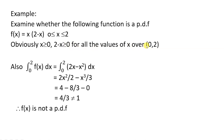For all values of x over [0, 2], if you integrate (2 − x) dx from 0 to 2, it becomes the integral of (2x − x²) dx, which equals [2x²/2 − x³/3]. Substituting the upper and lower limits 2 and 0, on simplification we get 4/3, which is not equal to 1. Therefore f(x) is not a PDF.